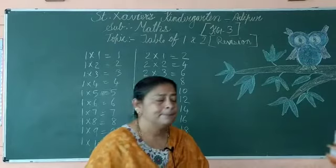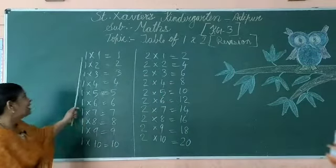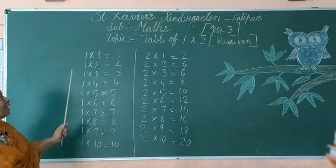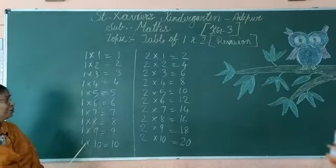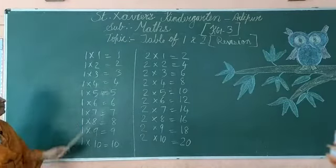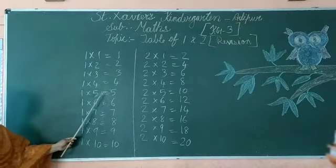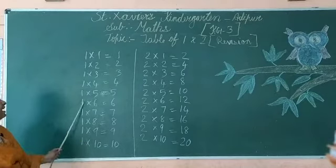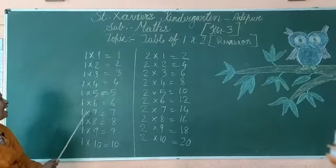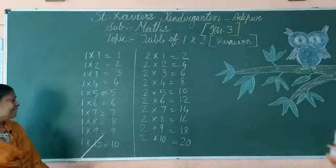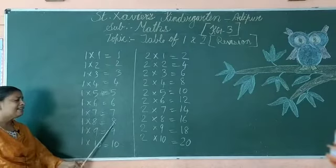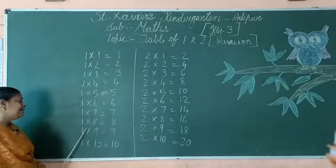One one's a one, one two's a two, one three's a three, one four's a four, one five's a five, one six's a six, one seven's a seven, one eight's an eight, one nine's a nine, one ten's a ten.